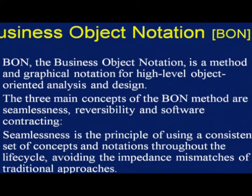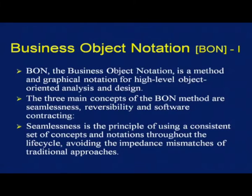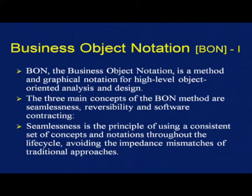It does not mean that if we have more diagrammatic notations we will always do better — that is not the yardstick. Business Object Notation (BON) is another method — a graphical notation for high-level object oriented analysis and design. The three main concepts of the BON method are seamlessness, reversibility, and software contracting. Seamlessness is the principle of using a consistent set of concepts and notation throughout the life cycle, avoiding the impedance mismatches of traditional approaches.